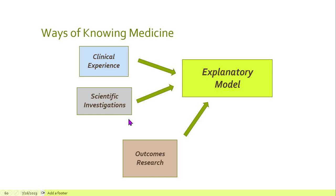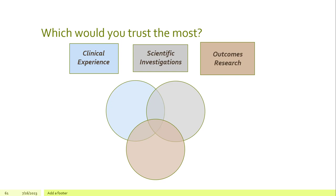The second way we know medicine is through scientific investigations, including animal studies and the like. Finally, we have outcomes research — typically human studies that investigate the efficacy of different treatment strategies. They're not as rigorous as FDA clinical trials, but they can be very promising. So which type of evidence do you find most convincing? The clinical experience of your doctor, scientific investigations, animal studies, or outcomes research — how have other patients fared?